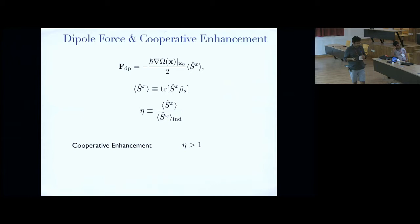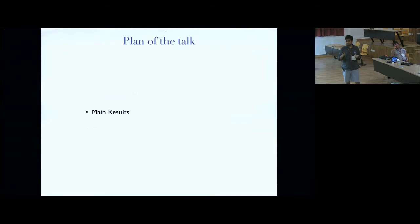So then the quantity that I'm interested in, because what I was interested in was how does the dipole force get modified in a collective system. So I define a ratio of this dipole force, which is parameterized by this S_x, calculated for the collective case, divided by the same thing calculated for a bunch of emitters where I, by hand, turn off all the collective effects. So they just are like a bunch of independent emitters. And this ratio I call eta, and whenever this eta is greater than one, there is a cooperative enhancement of the dipole force.